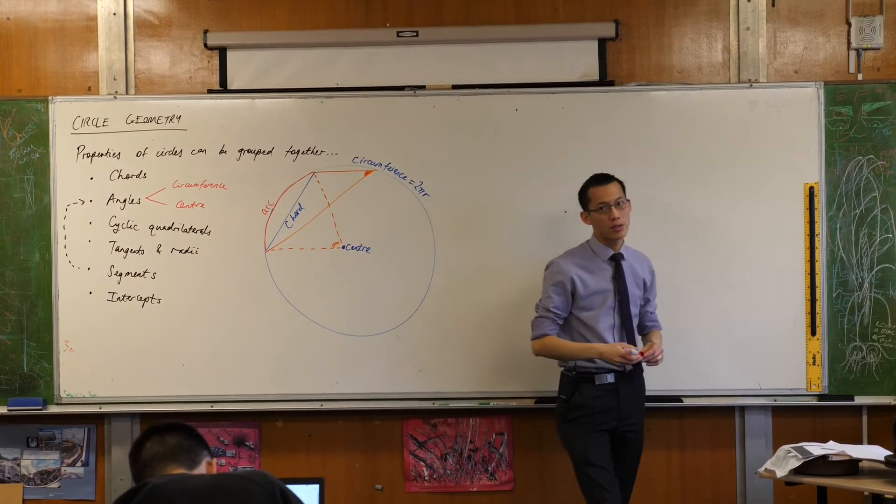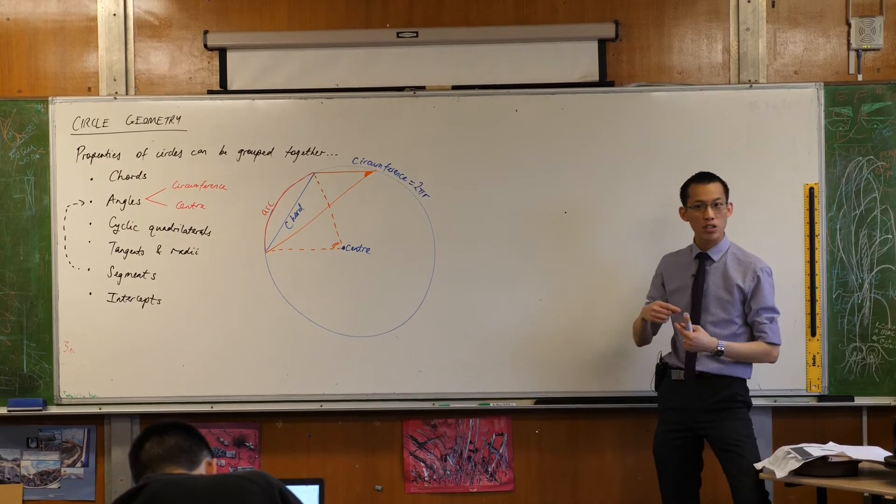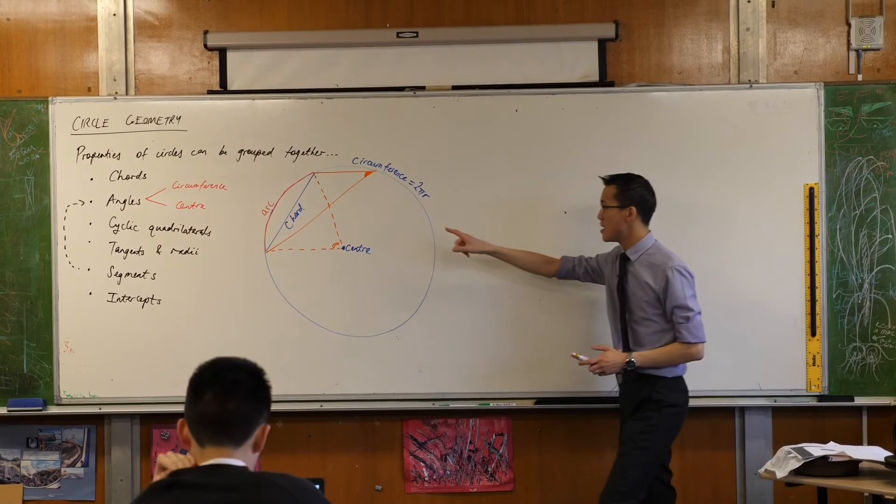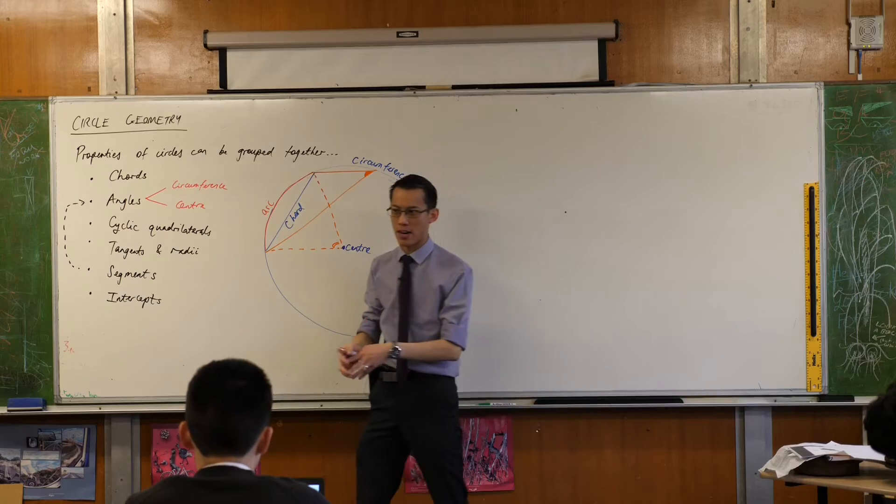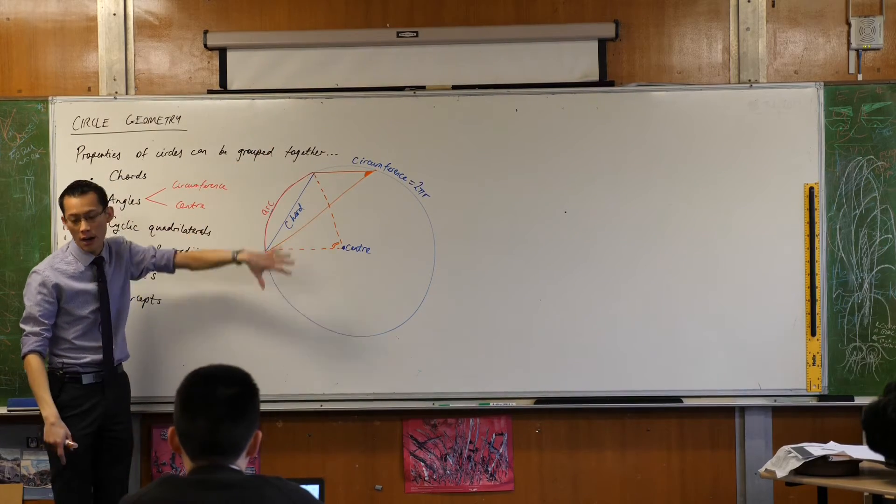So those two angles that I just drew in orange, we would call both of those angles standing on that arc. Let me say that again. These guys are angles that stand on this arc. You can almost imagine them like the legs of a stick figure and they're standing on the two edges of the arc.